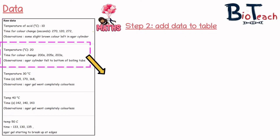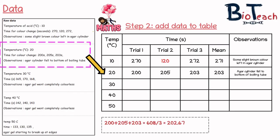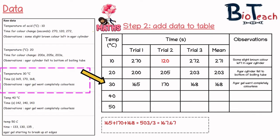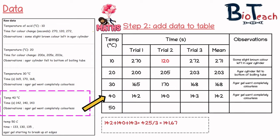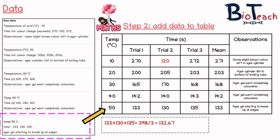I would do exactly the same for all the temperatures. For 20 degrees I've popped that in, making sure I copy the observation exactly onto the data table. The same for 30, 40, and 50 degrees — each time calculating the mean as well. The box at the bottom of the table shows how to calculate the mean for anyone who needs it. Throughout, I've kept that 120 seconds for the 10-degree temperature highlighted. I haven't identified any other anomalous results — all the others seem to follow the pattern, so I'm happy with that data table.